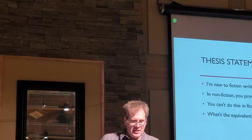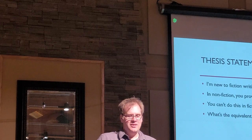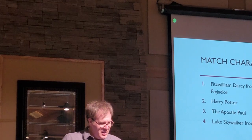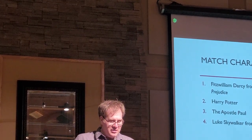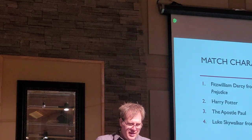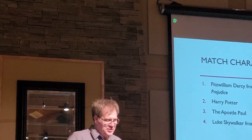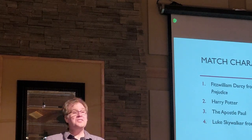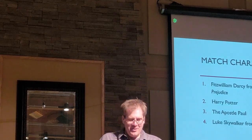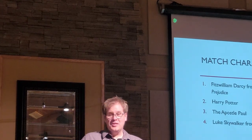I'm now going to play a little game called 'Match the Character and the Flaw.' On the left side are famous literary characters, and their flaws are on the right side. The first one: Fitzwilliam Darcy from Pride and Prejudice — can anybody tell me what his flaw is? That's right — pride. It's one of the reasons that book title works so well; they put the flaw right there in front of you. Number two: Harry Potter — underconfidence. That's right.